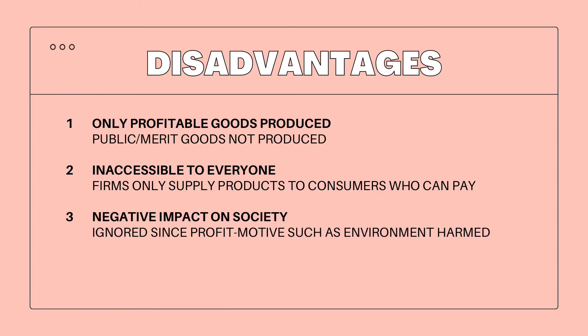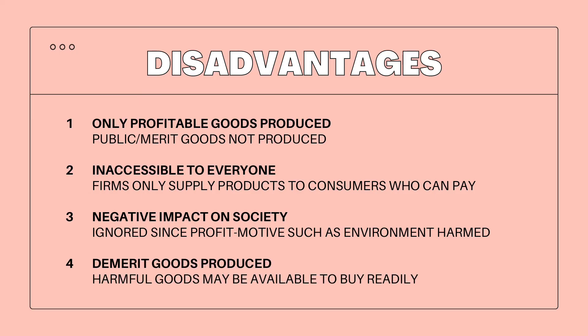Examples of negative impacts are ruined environment due to extraction of resources, and lack of biodiversity due to destruction of habitats. Demerit goods are also produced — harmful products such as drugs may be readily available to consumers without any restrictions due to lack of government intervention.